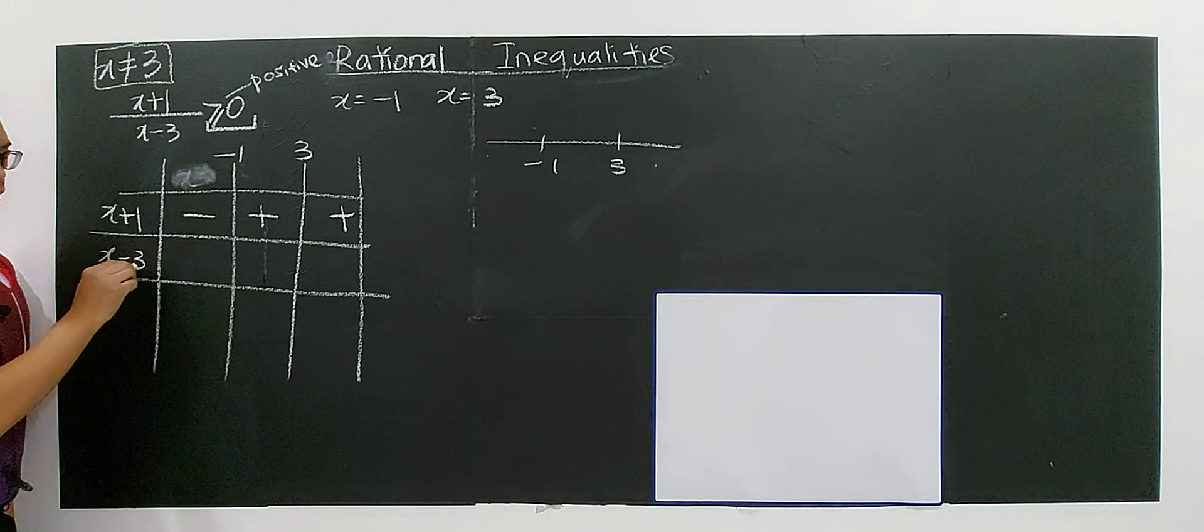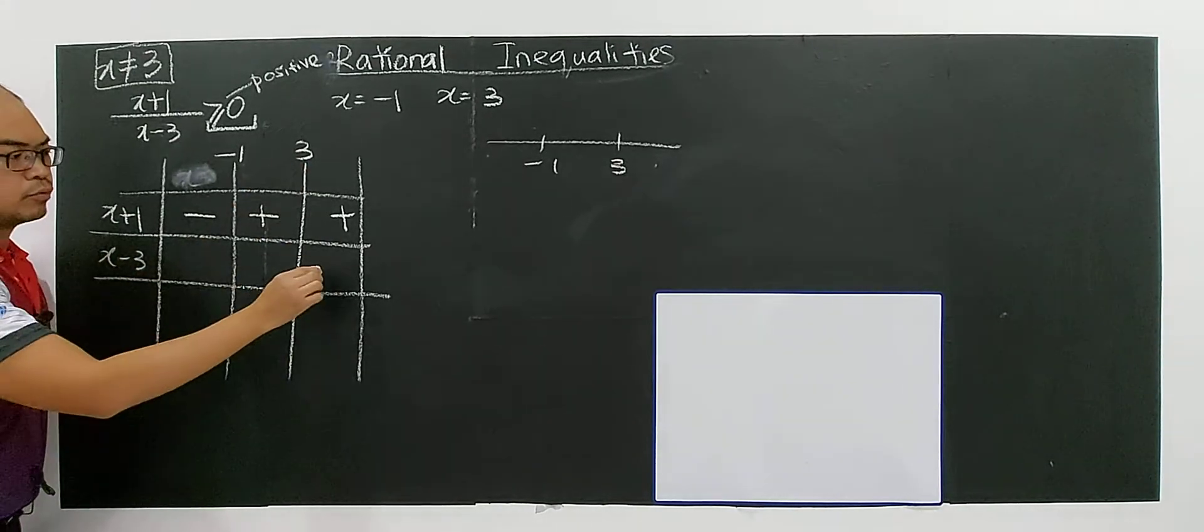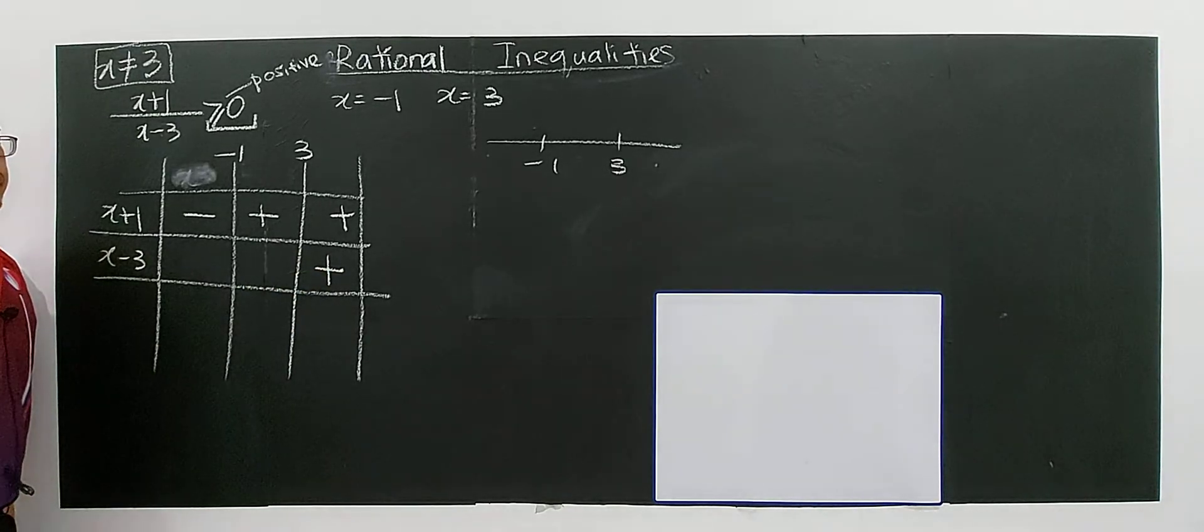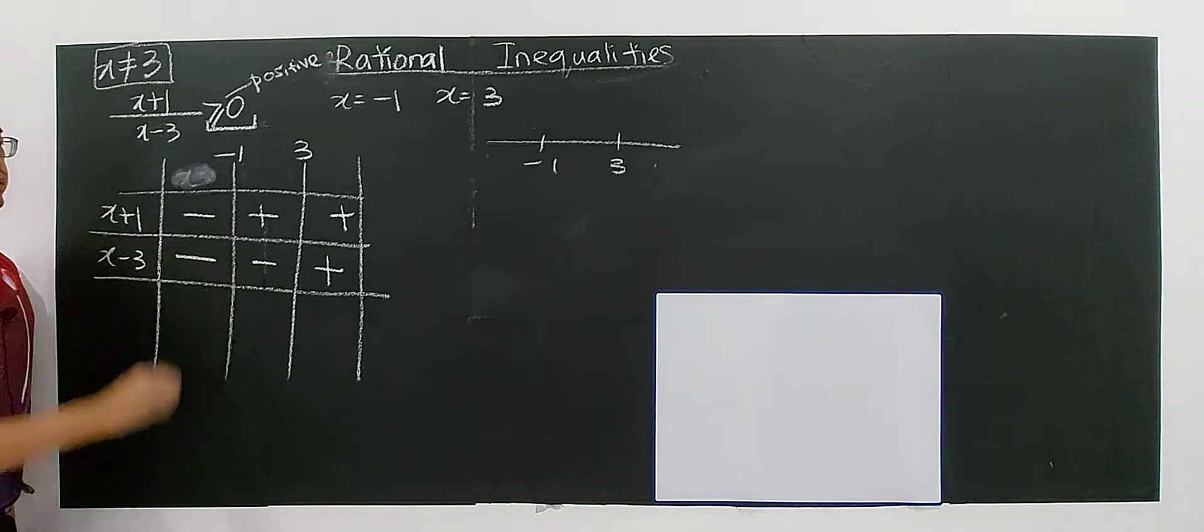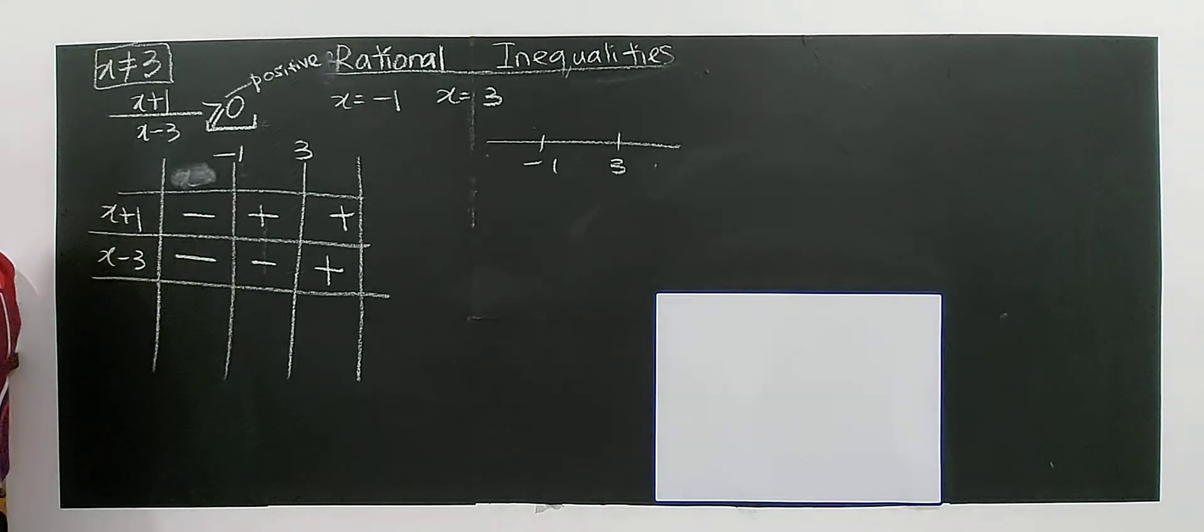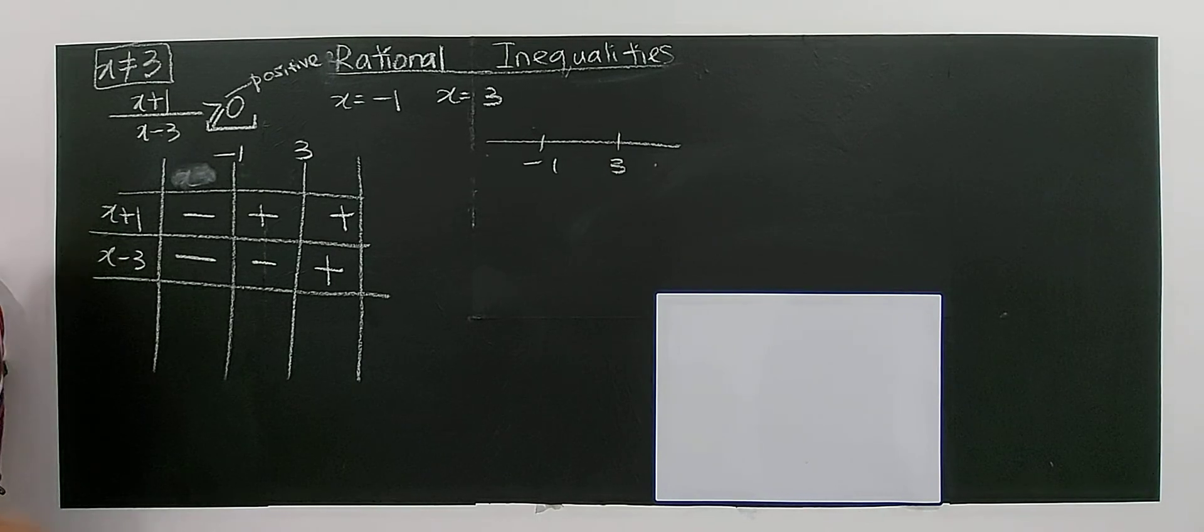Let's look at the next one. Three comes from x minus three, so after this line you will have positive. This one will be negative. This is the very simple way of solving the rational inequality.